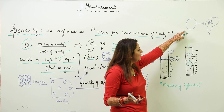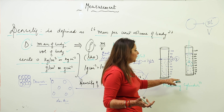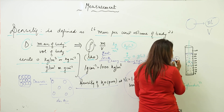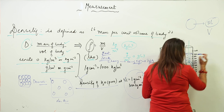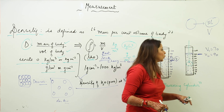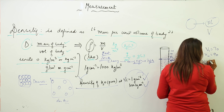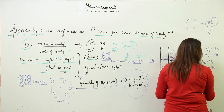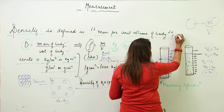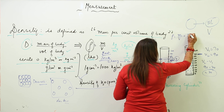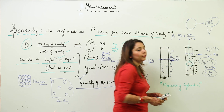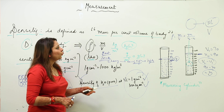We take a thread and suspend the stone — whose density we want to measure — into the water in the measuring cylinder. As soon as we do this, the water level rises from 70 to 90. So the initial volume V1 is 70 and the final volume V2 is 90. The volume of the stone is V2 − V1 = 90 − 70 = 20. Now we can calculate the density as mass M divided by this volume.